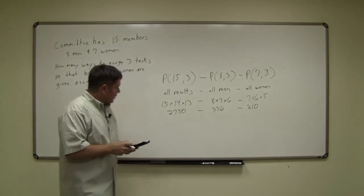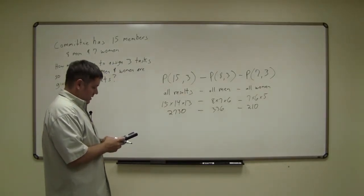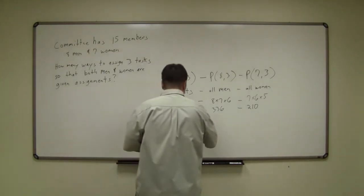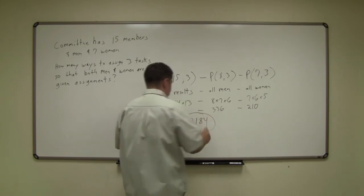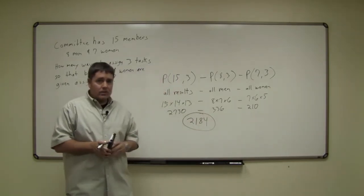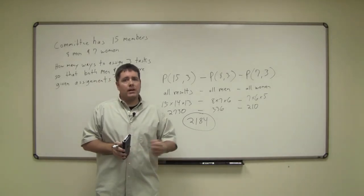So we take 2730 minus 336 minus 210, which gives us 2184. That's how many ways we can assign these three tasks such that we get both men and women.